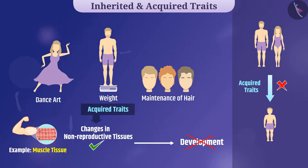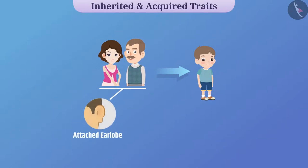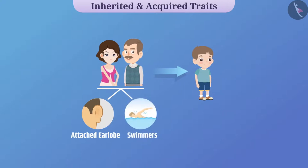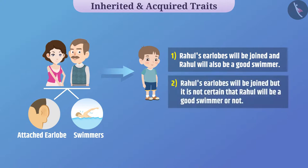Now, an interesting question for you. If Rahul's mother has attached earlobe and Rahul's father also have attached earlobe and both are good swimmers, then what can be said certainly about Rahul? Rahul's earlobes will be joined and Rahul will also be a good swimmer. Rahul's earlobes will be joined but it is not certain that Rahul will be a good swimmer or not. What is your answer?